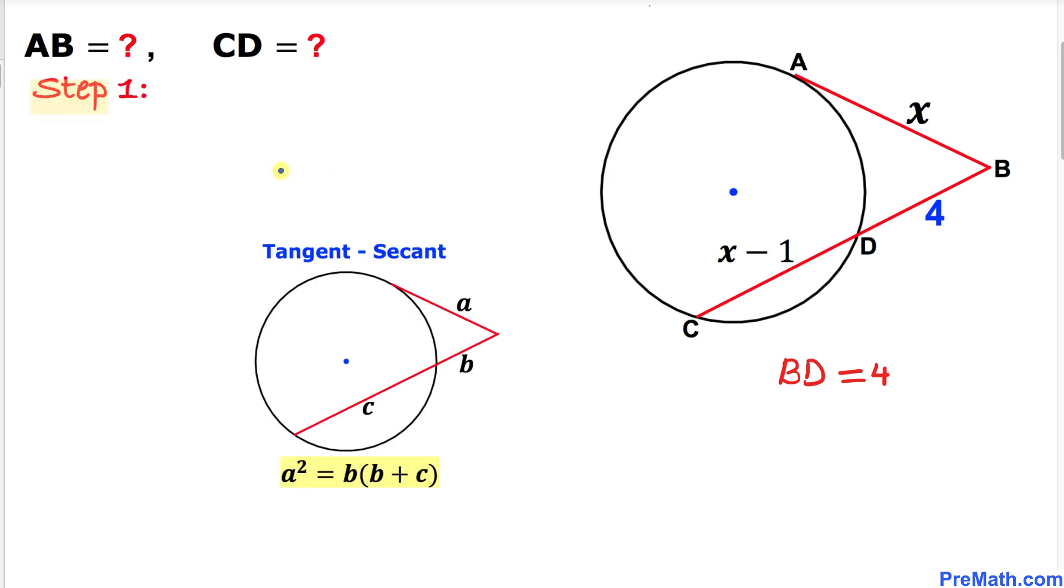And here's our very first step. Let's recall this tangent-secant rule. In this rule, this tangent a could be written as a times a equals to, for this secant, this outside part is b times this total part is b plus c.